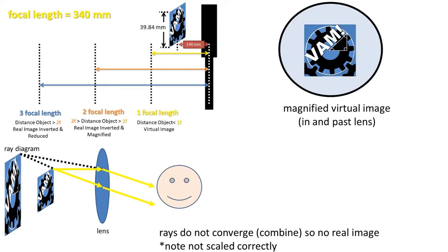For our case, the object is placed closer than one focal length, so it will be a magnified virtual image. Virtual means that the image is within the magnifying glass, and it cannot be projected onto a screen. See in the ray diagram how the rays don't converge or combine, so the light coming through the magnifying glass will always be fuzzy.